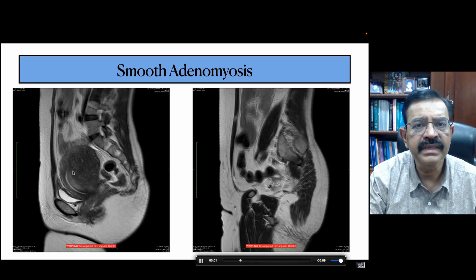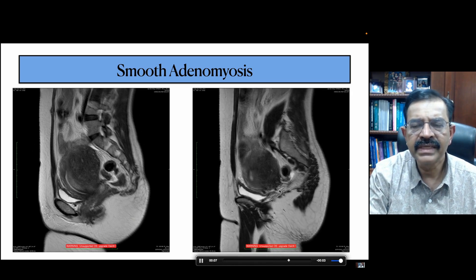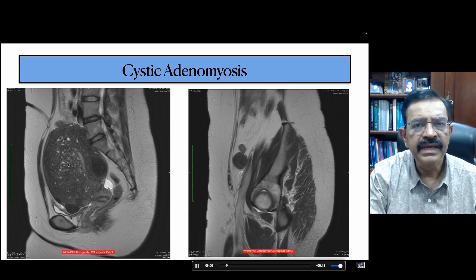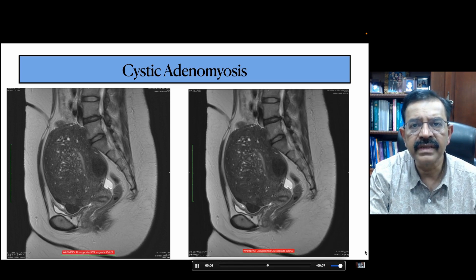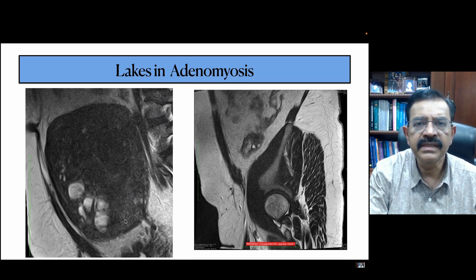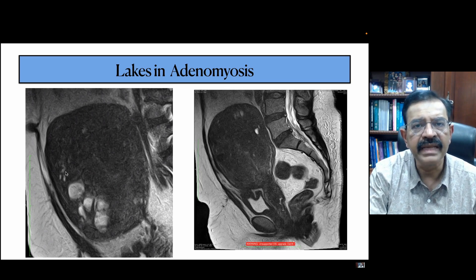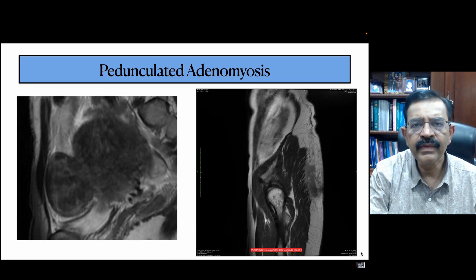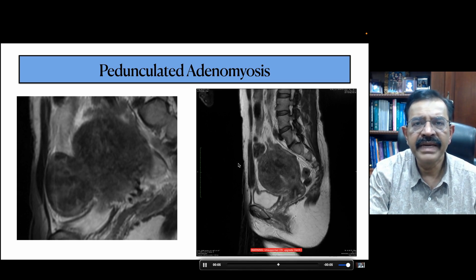The smooth adenomyosis is found very smoothly in the posterior wall. In my experience, these are the ones that are very easy to treat with HIFU. The second is cystic adenomyosis — you can see little cysts within it, which can be a bit more difficult to ablate as they are long-standing. The third type has huge cystic lesions or lakes, which are much more difficult to ablate as they represent bleeding within the adenomyosis. Then we have pedunculated adenomyosis, where a lesion comes out of the uterus.